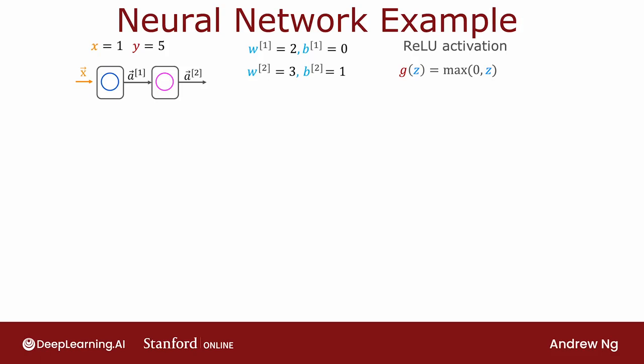So forward prop in the neural network looks like this. As usual, a1 equals g of w1 times x plus b1. And so it turns out w1 x plus b will be positive, so we're in the max 0 z equals z part of this activation function. So that's just equal to this, which is 2 times 1, that's w1 is 2 times x is 1 plus 0, that's b1, which is equal to 2.